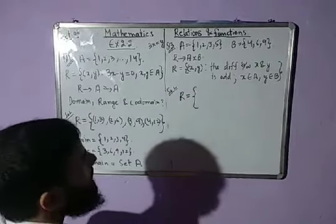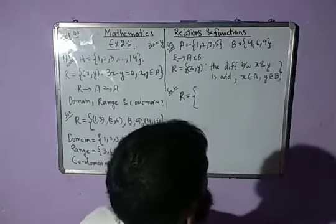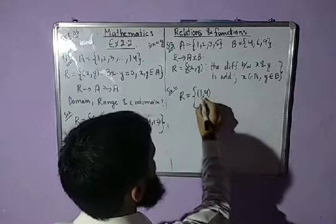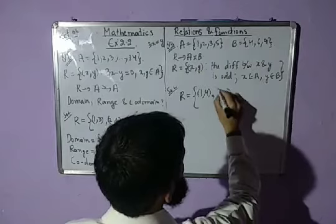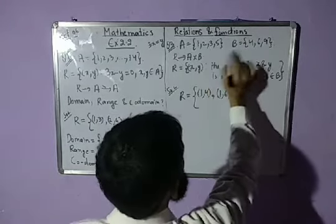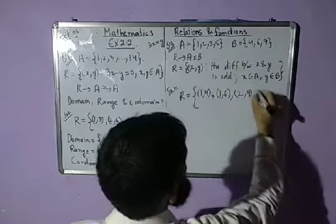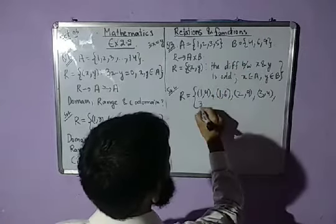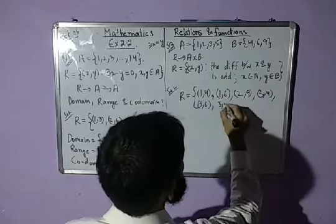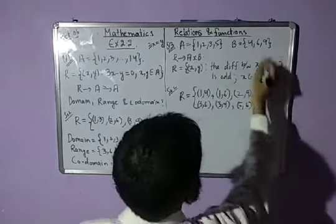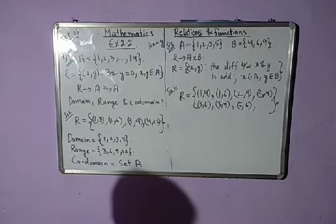We choose pairs (x, y) where x is from A and y is from B and the difference is odd. (1, 4): difference is 3, odd — include. (1, 6): difference is odd — include. (1, 9): difference is even — exclude. (2, 4): exclude. (2, 6): exclude. (2, 9): odd — include. (3, 4): include. (3, 6): include. (3, 9): exclude. (5, 4): include. (5, 6): include. (5, 9): exclude. So R equals {(1,4), (1,6), (2,9), (3,4), (3,6), (5,4), (5,6)}.